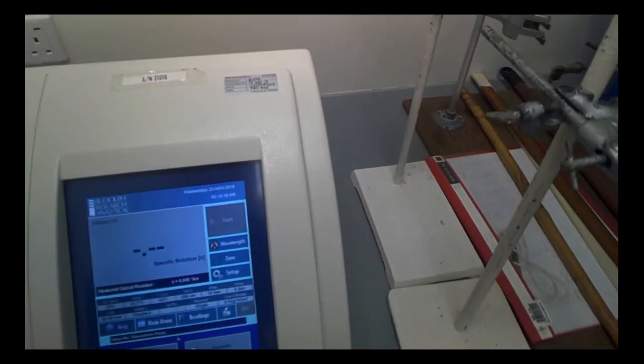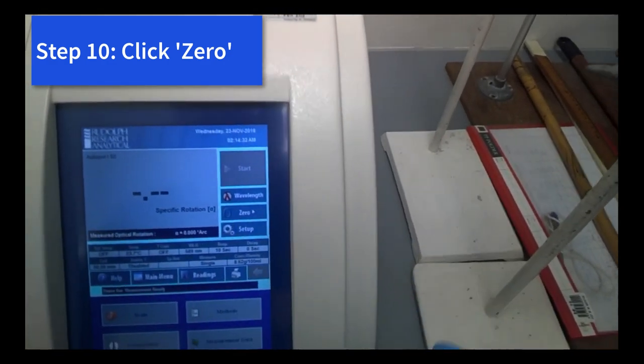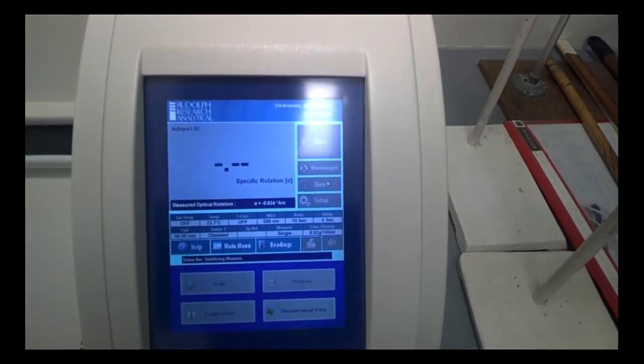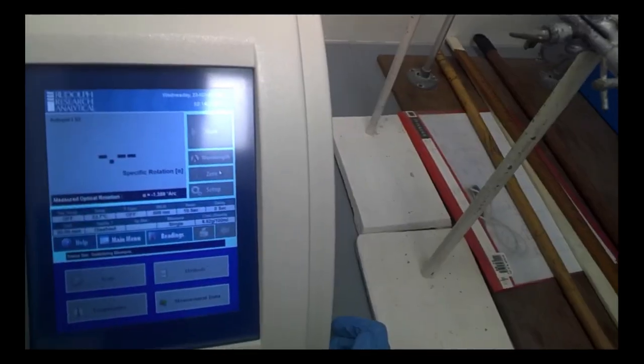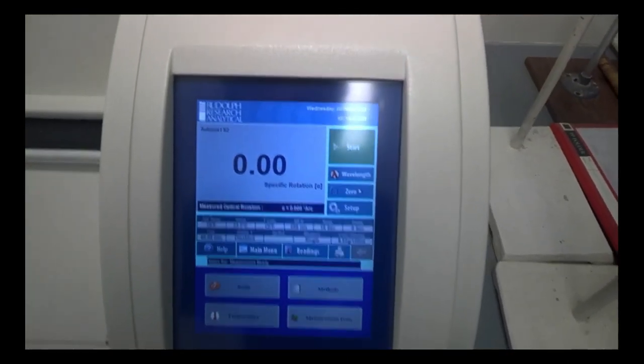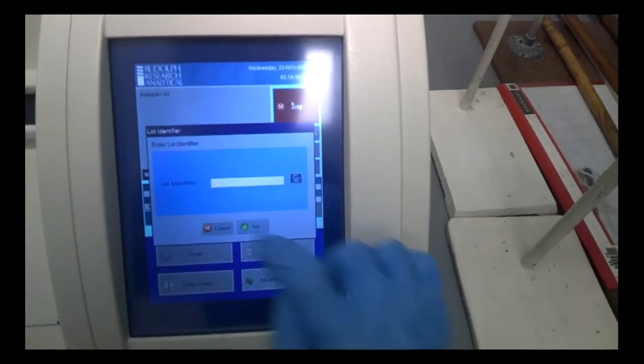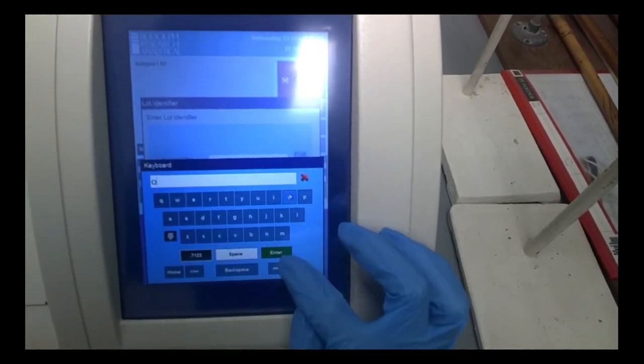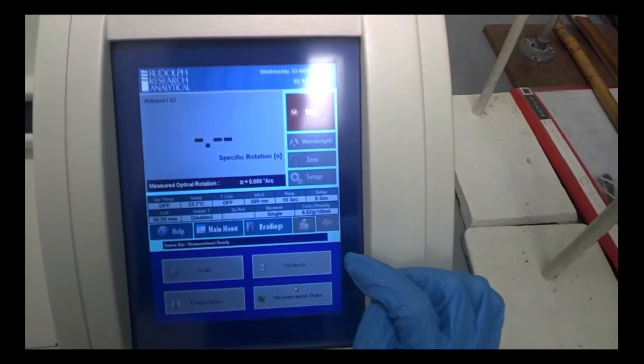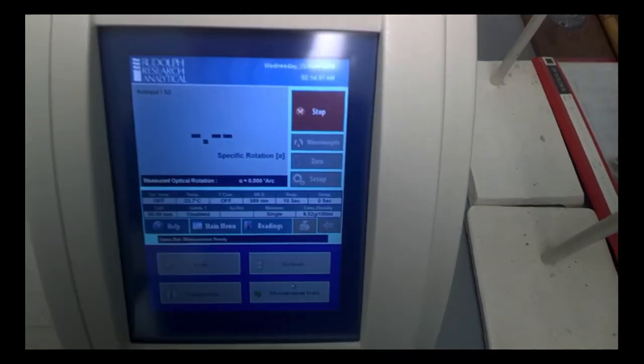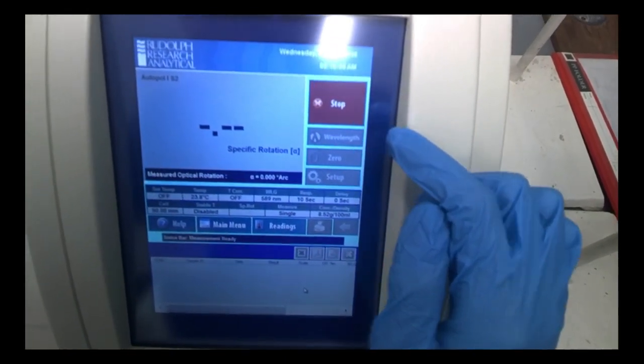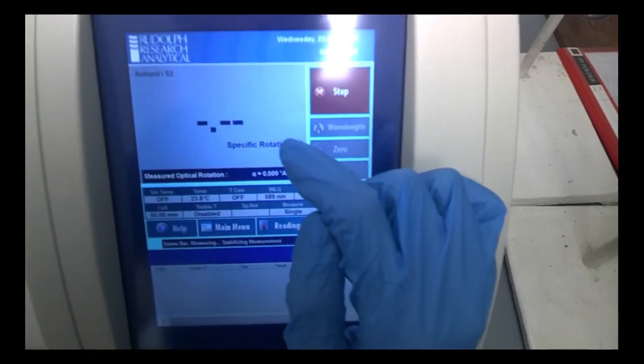So right now we can do a scan. First, place it into the sample holder. Close. All right, so of course we have to do zeroing. Remember, since it's all ethanol and ethanol does not have any chiral center, we should expect the reading to be zero. So let's see what happens. Start. For log identifying, we just key in any initial that represents your sample. Enter. Same thing for sample identifier.